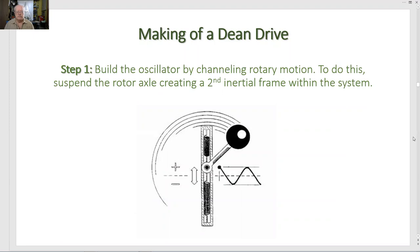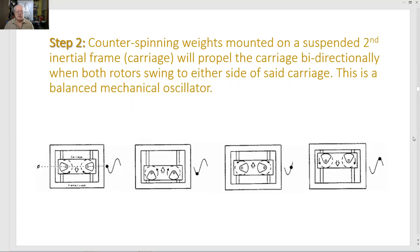Making of a Dean drive. Step one, build the oscillator by channeling rotary motion. To do this, suspend the rotor axle, creating a second inertial frame within the system. Step two, counter spinning weights mounted on a suspended second inertial frame or carriage will propel that carriage bidirectionally when both rotors swing to either side of said carriage. This is a balanced mechanical oscillator.